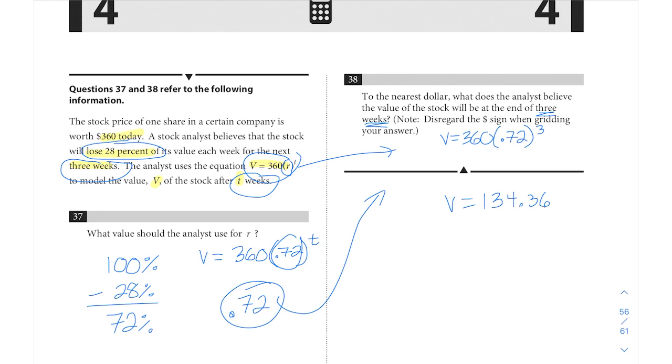And then times 360. That's messy math, luckily it's calculator portion. That comes out to 134.36928 and they want to know the value of the stock at the end of those three weeks.